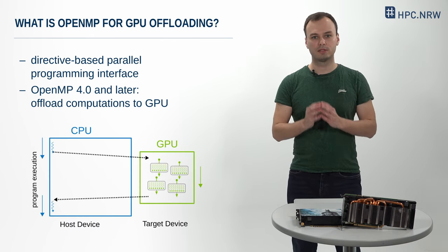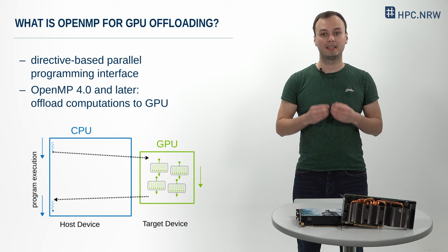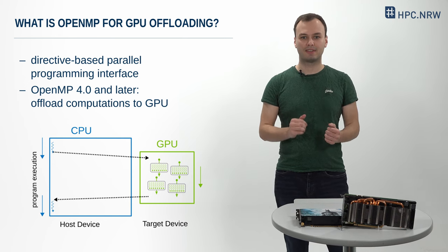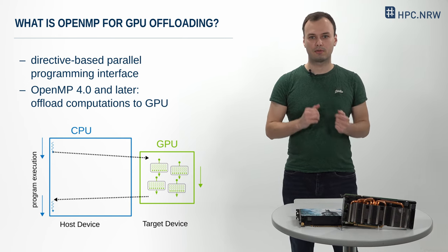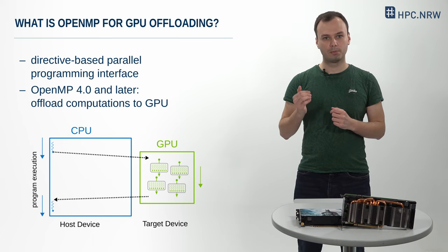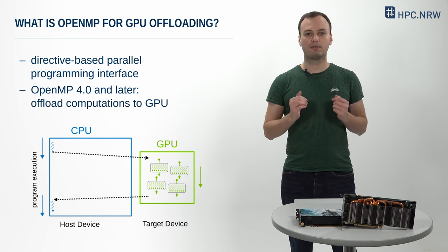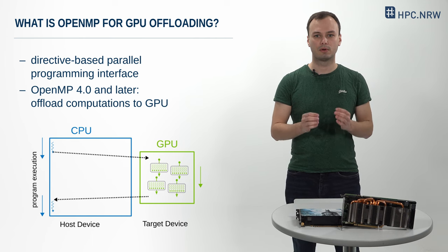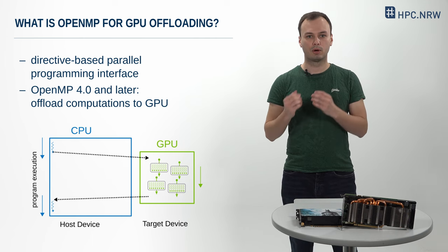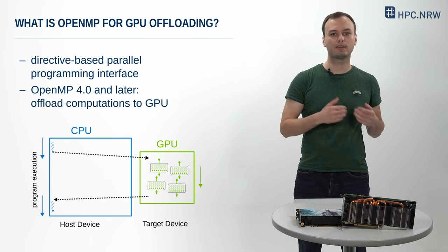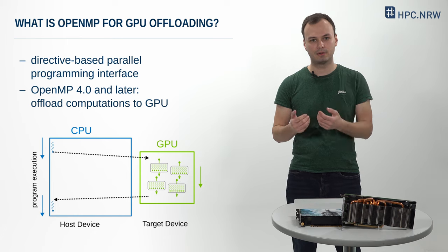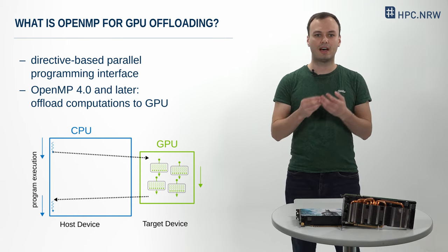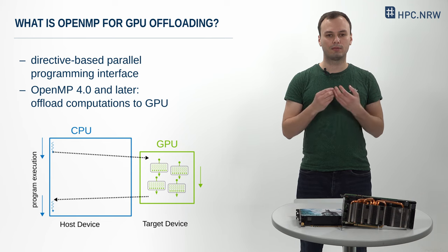A normal execution of a program is on the CPU, also known as the host device, with one or several tens of threads. OpenMP GPU offloading means that during the execution, the computations can be offloaded from the host to a target device, for example a GPU, with hundreds of thousands of threads, and thus achieve unprecedented performance.